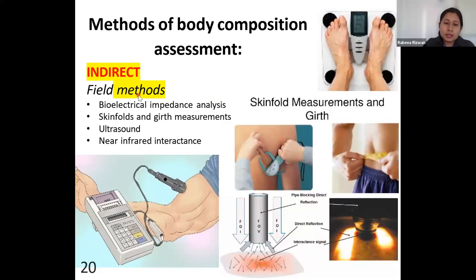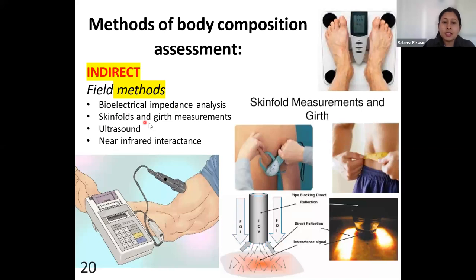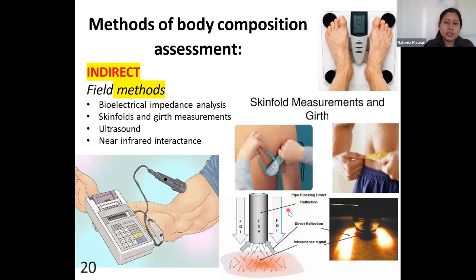Field methods for measuring body composition — particularly body fat — include four techniques: bioelectrical impedance analysis, skinfold and girth methods, ultrasound, and near-infrared interactance. Here are samples showing how the skin can be folded and measured using a caliper to assess visceral adipose body fat. Ultrasound is also shown as an example.